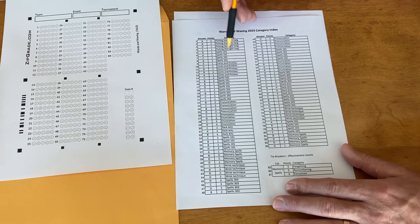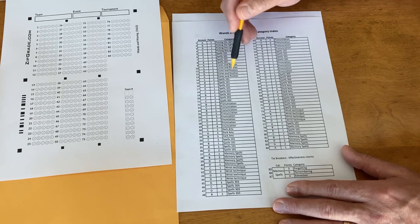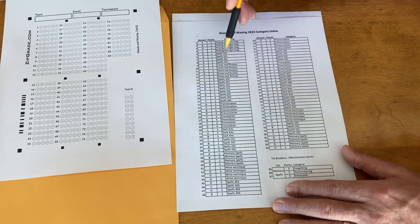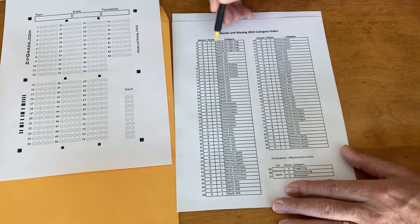This is the kind of category index you would see at a station-based event because there's sort of blocks of categories on here, and each of the stations is probably dedicated to questions of a certain variety or certain level of difficulty. Picking the right twig is at a station here, we get Spells 101, Cores and Finishes - these are all different topics that might be in a Wands and Waving event.